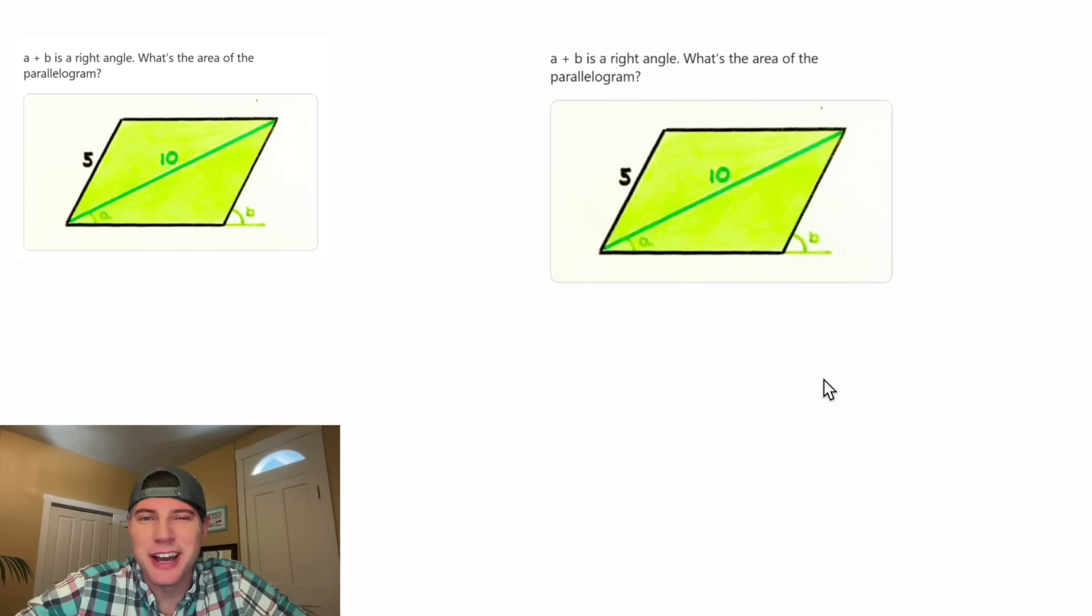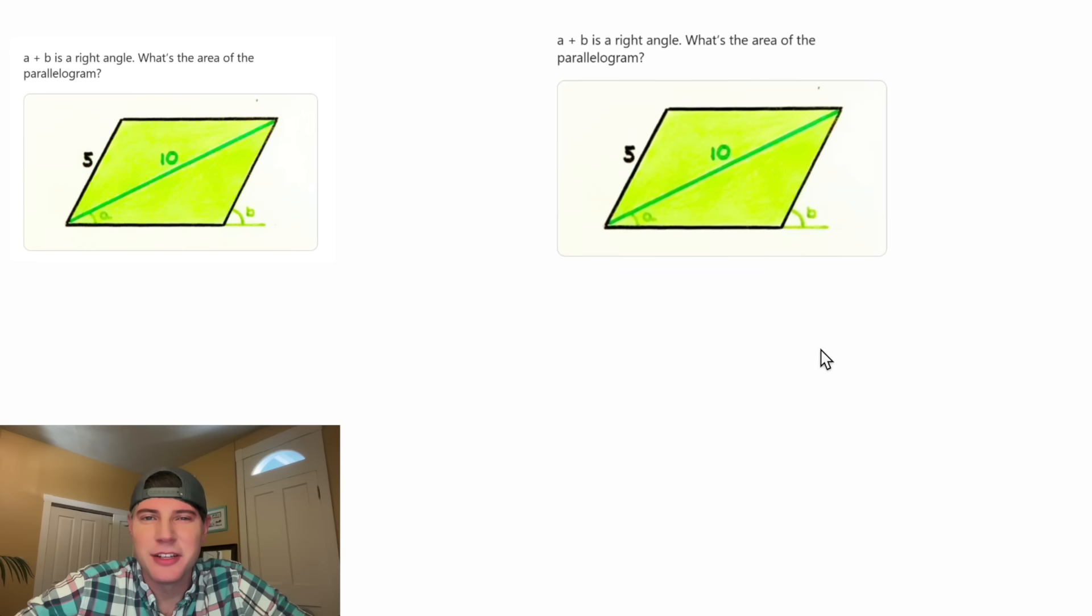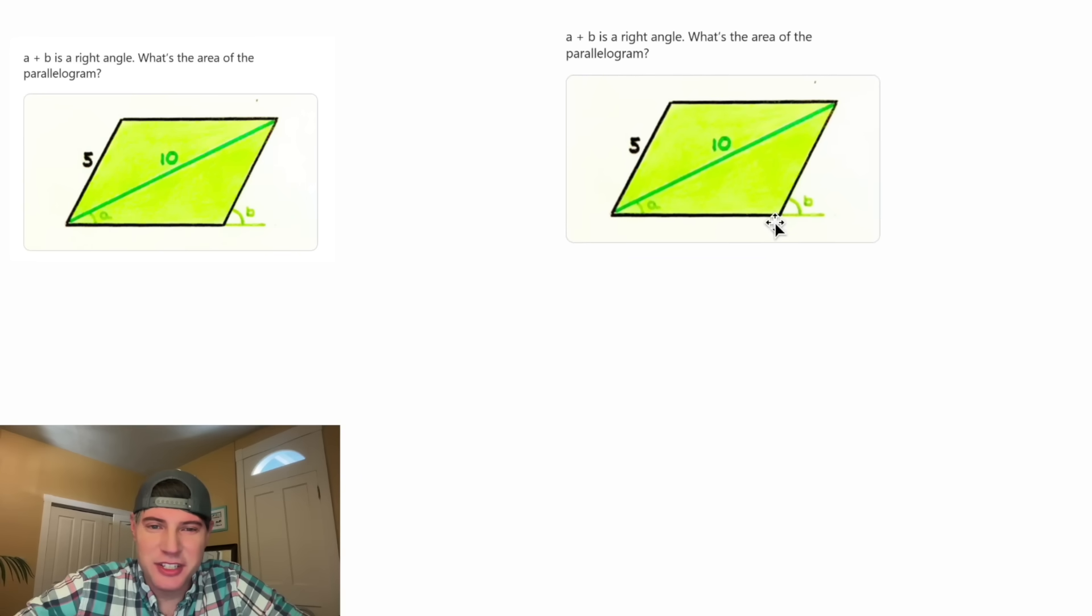And if you want to try this one, pause it right now because I'm going to solve it in 3, 2, 1. First, let's extend this line here and then drop this line perpendicular to the first line. And we can focus on our new triangle. We know that the hypotenuse of this triangle is the same thing as this side here, so it's equal to 5.